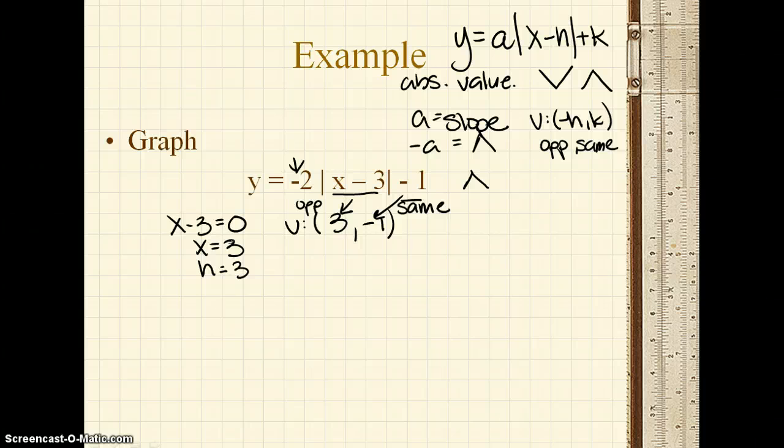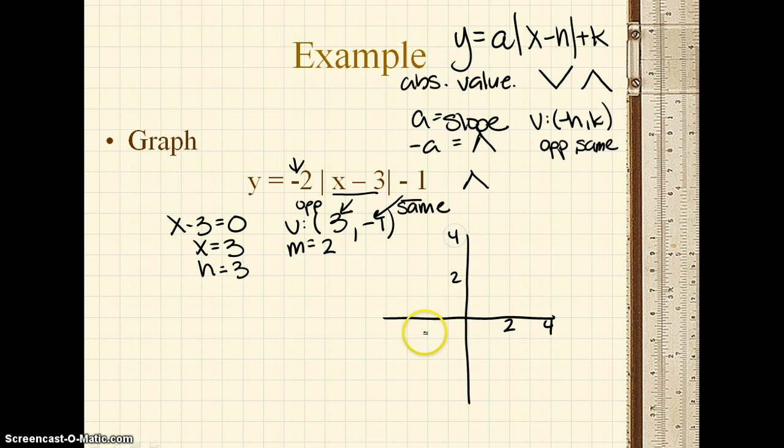So once we have the basic information of the vertex and the shape, and the slope itself, which is 2, we can graph it pretty quickly. So the first thing that we need to do is make our axes. Okay, so we need to label a couple of them to make sure we know what our boxes represent.